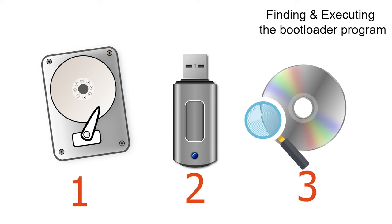GPT is a modern way to store a bootloader program and partition information. It uses 4 kilobits of disk space after the first 512 bytes of the hard disk. Since it does not modify or use the reserved disk space for MBR, both BIOS and UEFI-based systems can use it. GPT is redundant — it saves a copy of the partition information at the end of the disk. It supports a maximum of 128 partitions.